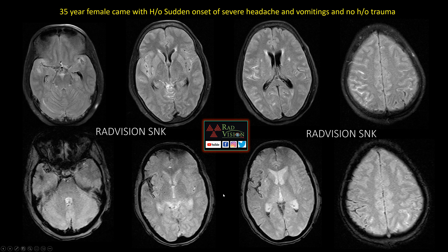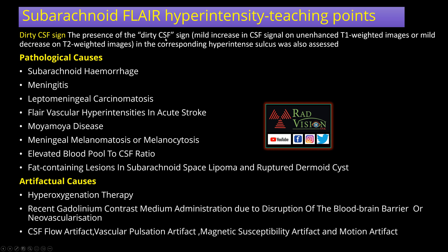The 'dirty CSF' appearance refers to a mild increase in CSF signal on unenhanced FLAIR and mild decrease on T2 images. Pathological causes of subarachnoid FLAIR hyperintensity include hemorrhage, exudates in TB meningitis, leptomeningeal carcinomatosis, Moyamoya disease, and rupture of a dermoid or lipoma. Artifactual causes include hyperoxygenation therapy, post-gadolinium administration due to blood-brain barrier disruption, and CSF flow artifacts, vascular artifacts, or magnetic susceptibility artifacts.